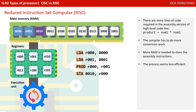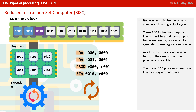There are more lines of code required in the RISC assembly version than the high level version, which only had one line. This means the compiler is required to do much of the conversion work, and more RAM is needed to store the assembly instructions. On the face of it, RISC seems less efficient. But each instruction can be completed in a single clock cycle. RISC instructions require fewer transistors and less complex hardware, leaving more room for general purpose registers and cache — which speeds up the processor. As all instructions are uniform in execution time, we can make use of pipelining. RISC processing also results in lower energy requirements.